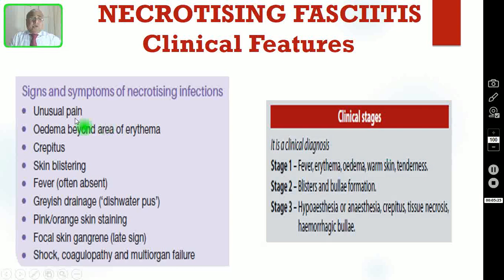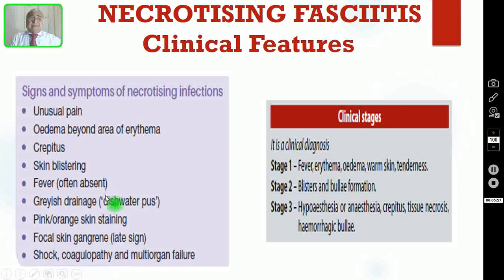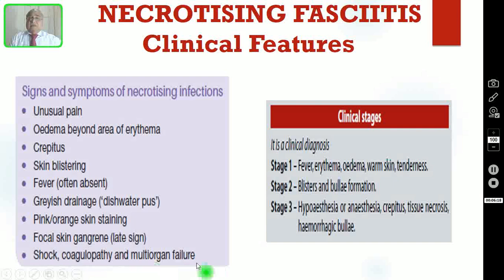Coming to the clinical features: unusual pain out of proportion to the physical finding. Edema will be present even beyond the area of erythema, and crepitus — because if you feel the subcutaneous area, you can feel crepitus due to gas formation inside. Skin blistering and hemorrhagic bullae can also be seen. Some patients may have fever. There is a characteristic gray discharge called dishwater pus. The skin will be pink, orange, or even purple. There will be focal skin gangrene as a late sign, and eventually the patient will go into shock, coagulopathy, and multi-organ failure.